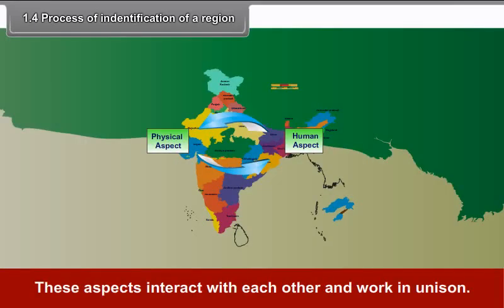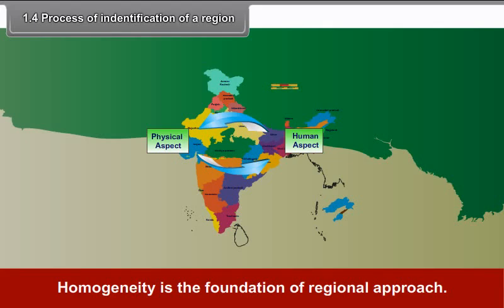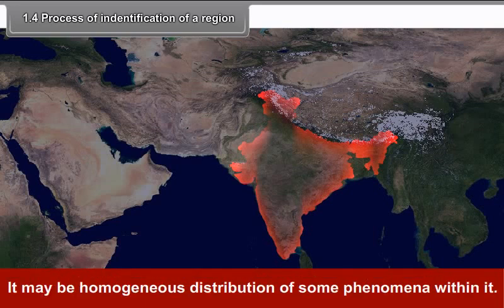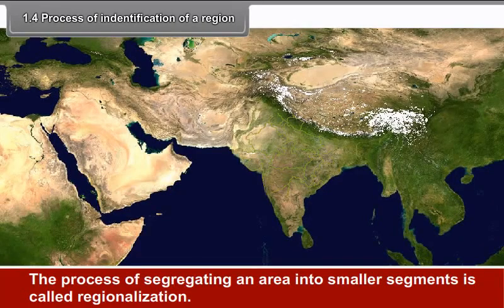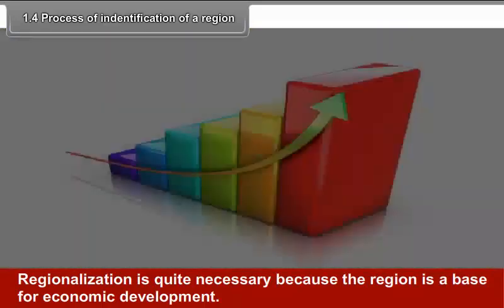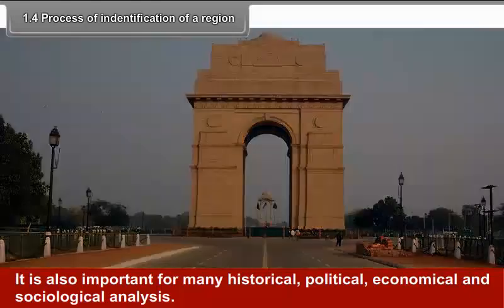The regional approach in geographical studies is very important. It focuses on a particular area of the Earth, studies all physical and human aspects, and these aspects interact with each other and work in unison. They provide relative homogeneity to the regions. Homogeneity is the foundation of regional approach. It is an organized study of various phenomena spatially related to each other, involving homogeneous distribution of some phenomena within it.